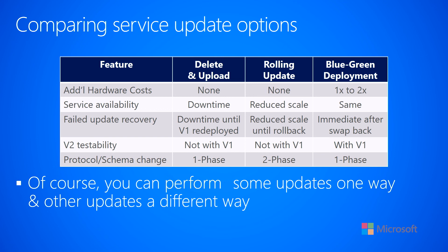The blue-green deployment scenario has additional hardware costs because you bring V2 up in addition to V1, so there's a period of time where you're paying for 12 instances. Once you configure the reverse proxy to send all traffic to V2, you can bring down the V1 instances, but there is that period of higher hardware cost. Regarding service availability: with the delete and upload option there is some downtime — you brought all instances down and client requests can't get in.